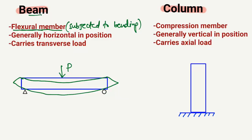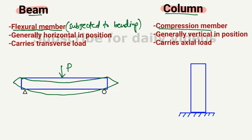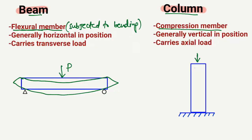In the case of a column, the column is a compression member. This means that if the load is acting on this member vertically, it is being compressed. Upon loading, this will try to compress and change the axis of the column. A small portion of the column is being compressed. This is the compression member, where the load is acting vertically on the member and the resistance is always provided vertically to the load.